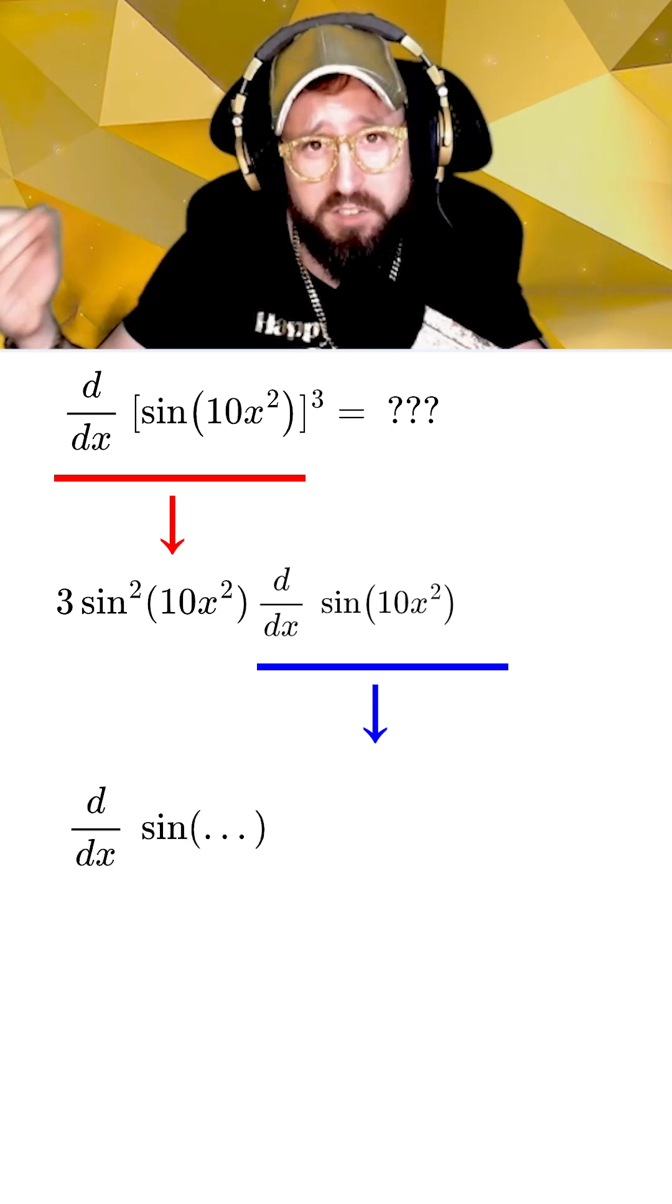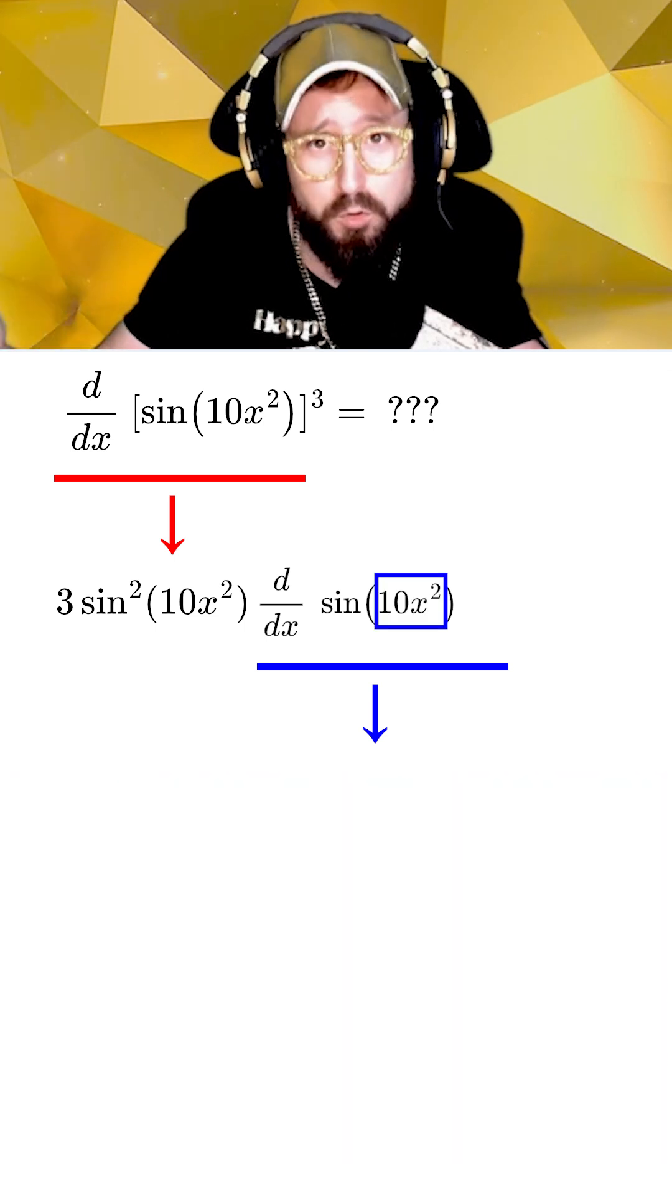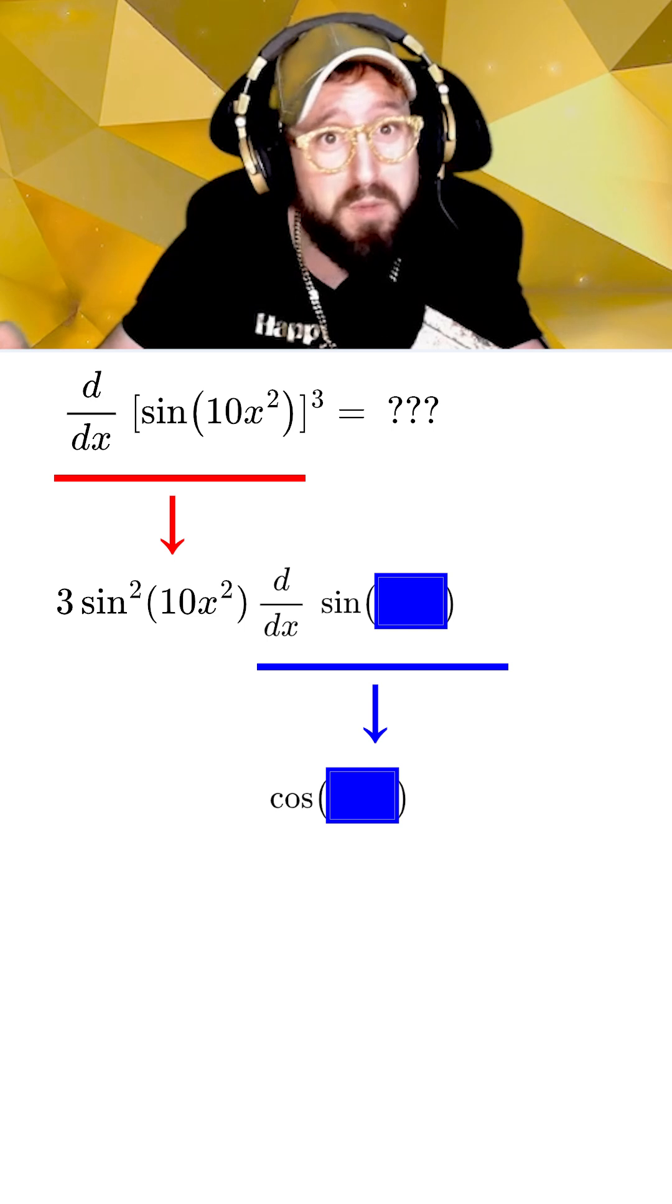However, I do know that the derivative of the sine of something is just the cosine of something. So here I'm going to call the 10x squared my new box and take the derivative of sine of box, which just gives me the cosine of box.